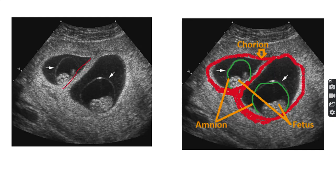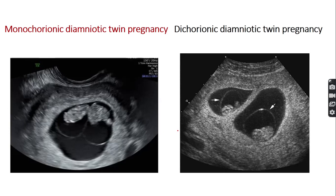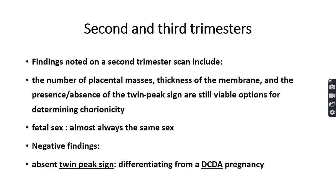In dichorionic diamniotic twin pregnancy, the inter-twin membrane is also known as the twin peak sign or lambda sign. This inter-twin membrane appears partly echogenic due to the presence of chorion between the two membranes — one chorion on each side, with the fetus and amnion visible. The key difference: in monochorionic twin pregnancy the inter-twin membrane is thin, while in dichorionic it is thick and partially echogenic.